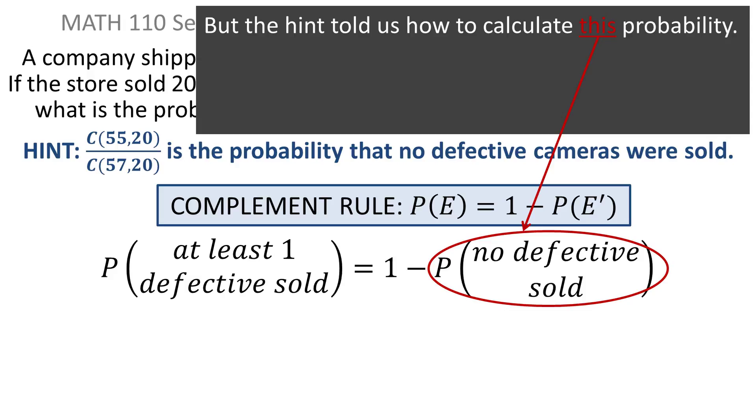So my job here is to calculate the probability of no defective sold. Actually though, the hint gave it away. They told us what that number is. We still have to calculate it though.